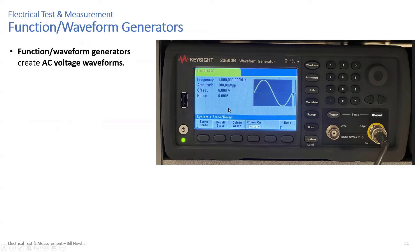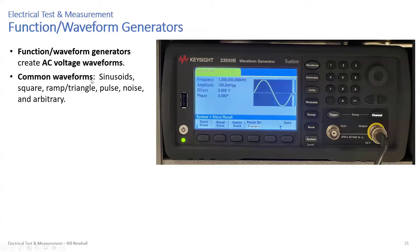Waveform generators and function generators create AC voltage waveforms. Common waveforms include sinusoids, square waves, ramp or triangular waves, pulses, noise, and arbitrary waveforms. I'll use function generators and waveform generators interchangeably. Strictly speaking, function generators can create sine waves, square waves, ramp and triangle waves, and pulses — they're called function generators because it's not just a sinusoid.